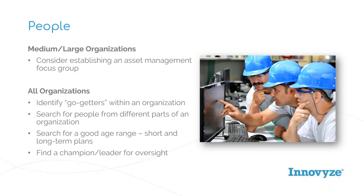For all organizations, whether big or small, what's key is really identifying your go-getters — the folks that are going to take that extra step outside their current job function. You have to identify those motivated folks who know what they're doing and are excited, because those are the people that will guide a group like an asset management focus group into the future. You've also got to get people from different parts of an organization. That is how you ensure a successful prioritization program. Everybody kind of needs a say for the overall organization as to what matters, and it should change over time. Your goals will change, how you look at risk will change, and how you prioritize things will change.